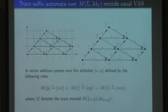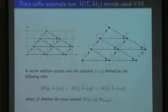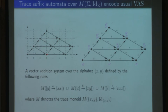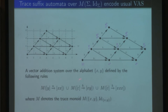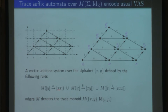Here is the first example of a vector addition system. We can see how trace suffix automata over commutative monoids encode usual vector addition systems. For example, the letter a labels the vector (2, -1). This is translated into a trace suffix automaton rule with the trace of y on the left-hand side (because the -1 implies we must remove y) and the trace of xx on the right-hand side. Note that our vector addition systems are more general than usual ones due to the level-regular contexts.